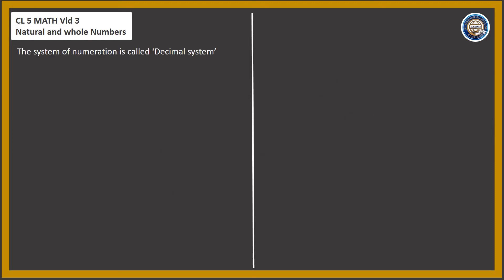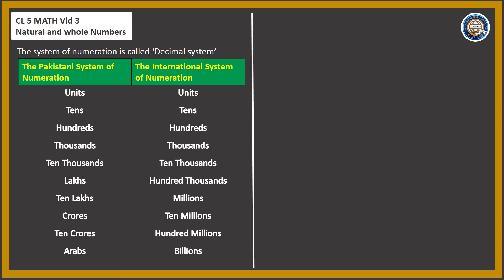The system of numeration is called the decimal system. We have two systems of numeration: one is the Pakistani system and one is the International system. In both systems we have units.